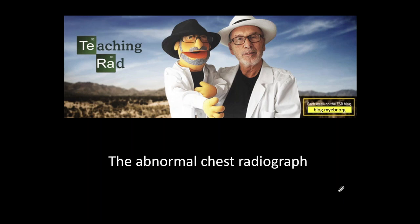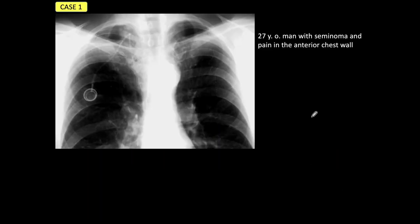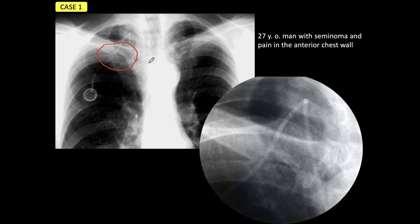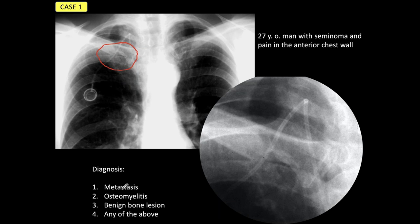Let's go to case number one. This is a coned-down radiograph of the upper chest in a 27-year-old man with seminoma who has pain in the anterior chest wall. I think you see the lytic lesion in the proximal right clavicle. I'll give you a coned-down view so you can see it better. I'm offering you four diagnoses: is this a metastasis, or an infection — osteomyelitis?